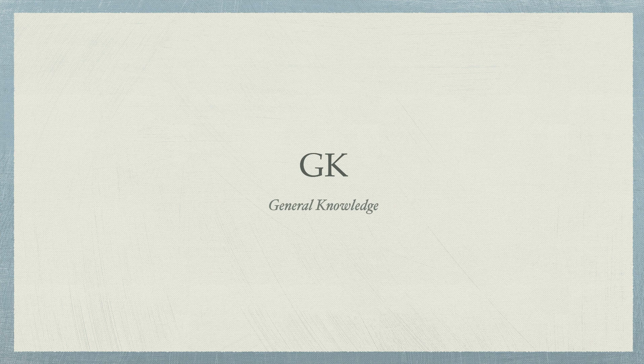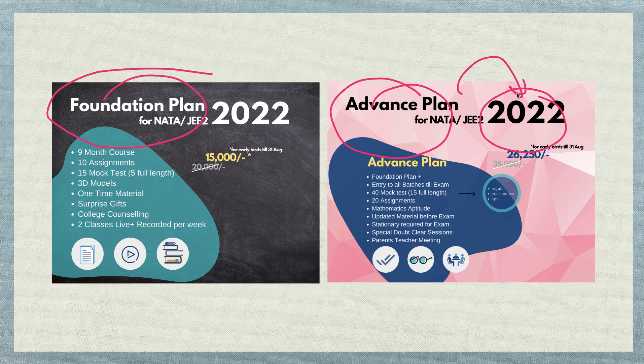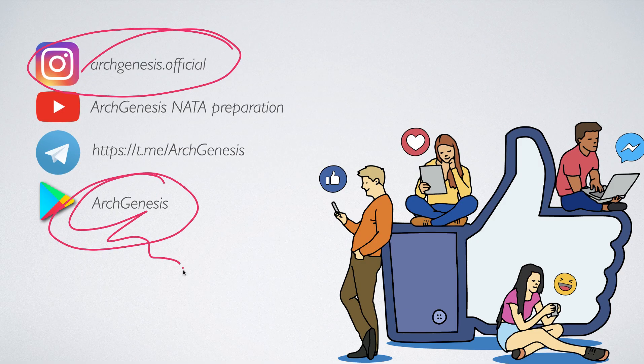I will try to give you some interesting information. But before I start, let me tell you that the Foundation Plan and Advance Plan for 2022 have been launched. If you want to avail them, you can download the ARF Genesis app from the Google Play Store, or the link will be in the description box. There is a 25% discount till 31st August.